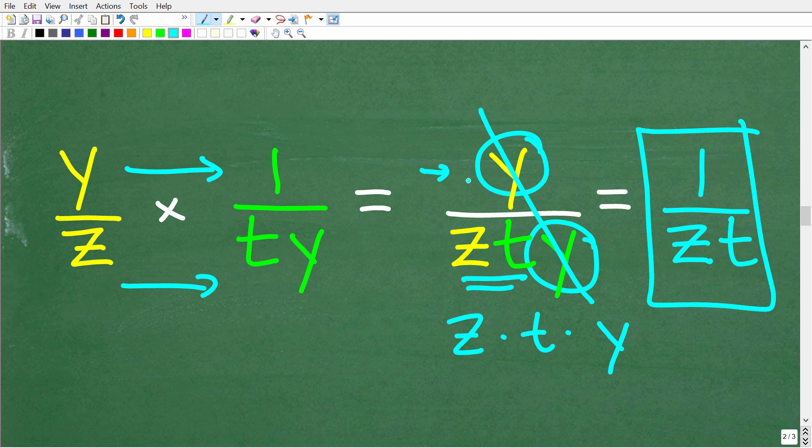Now you might be asking yourself, well, I don't see a one up here in the numerator. Well, one is always a factor of anything. So we have a y right here. So that's really y times one. So again, we're going to cross cancel these y's. And we'll be left with one over z t. So again, this is the final answer. And hopefully you understand the algebra to do this problem.